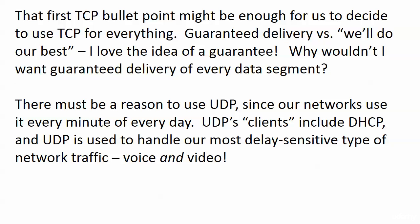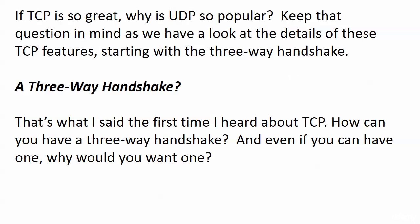But there has to be a reason we use UDP, and we use it for a lot of things. Our networks use it every minute of every day — especially DHCP, the protocol that dynamically assigns IP addresses. UDP handles that. UDP is also used for voice and video traffic, where even the slightest delay causes problems. So if TCP is so fantastic, why do we use UDP at all, and why is UDP so popular?